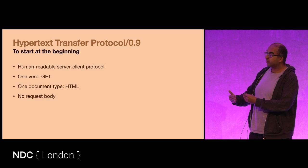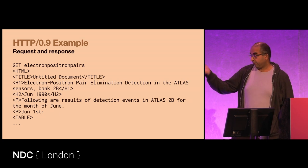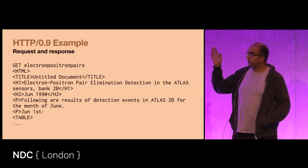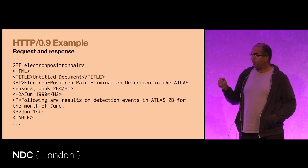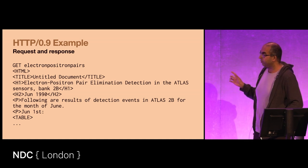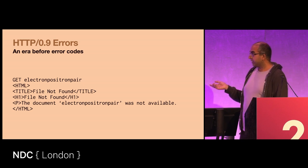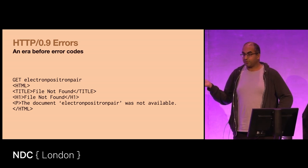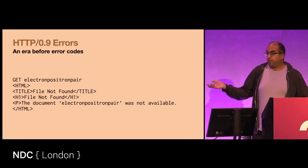You could get a document, you would receive HTML — that is all that it could do. For example, this would be a 0.9 request: you would ask for electron-positron pairs, which is just a document name. You couldn't have any paths, just a name, one single word, and you would receive HTML. And if that document didn't exist, you would also receive HTML, and it was up to you as the end user to work out whether you received the document or an error message.